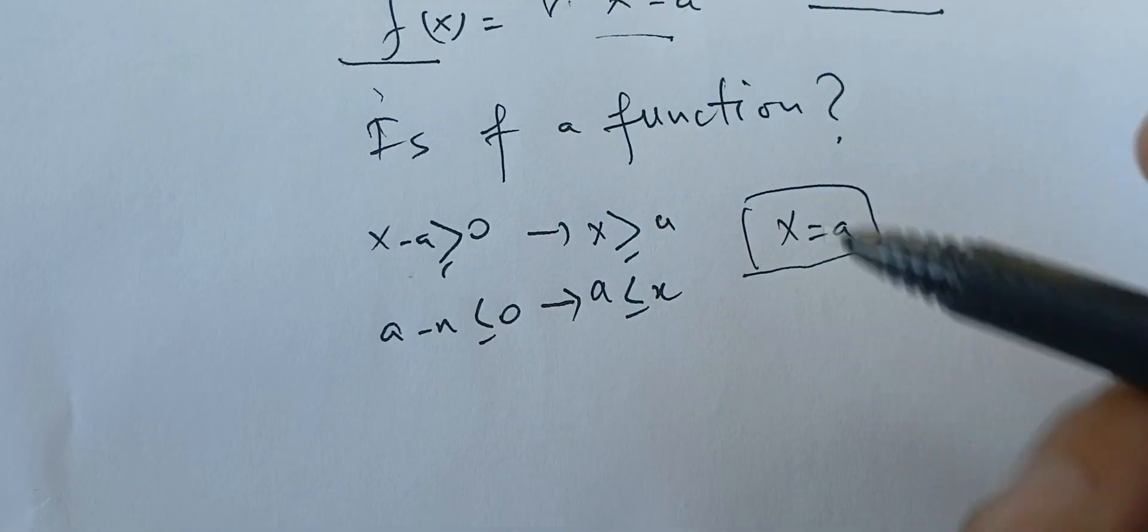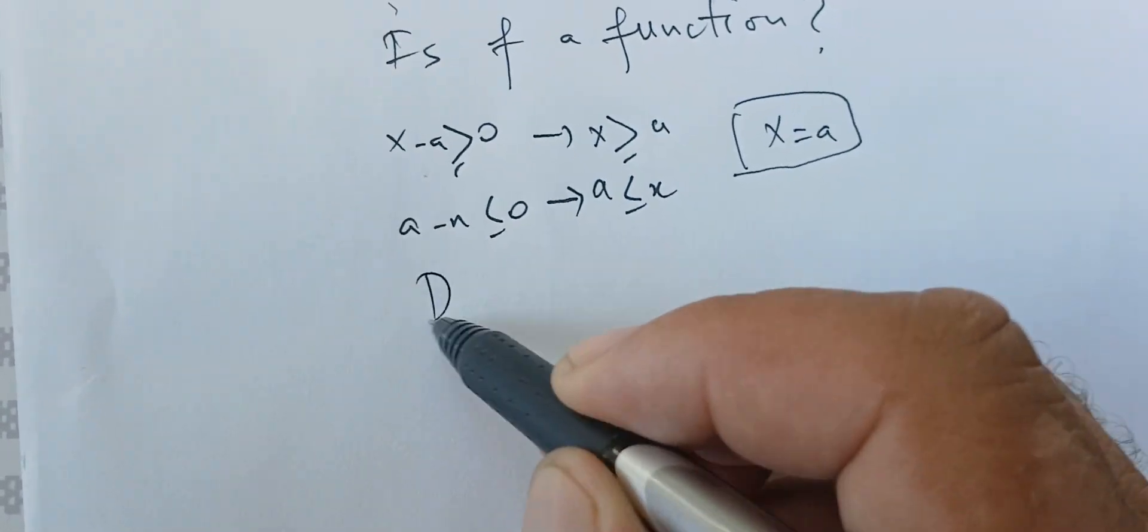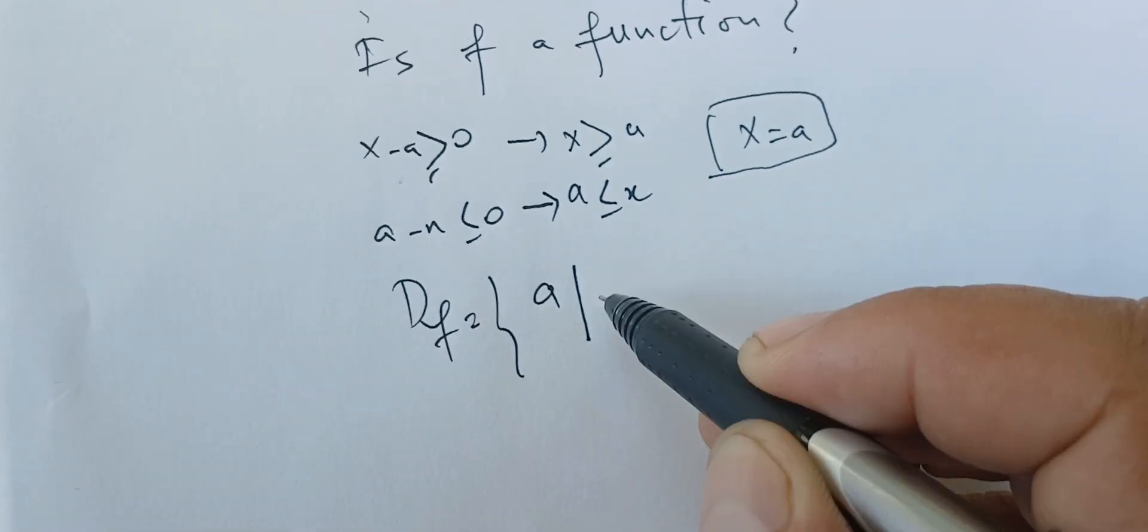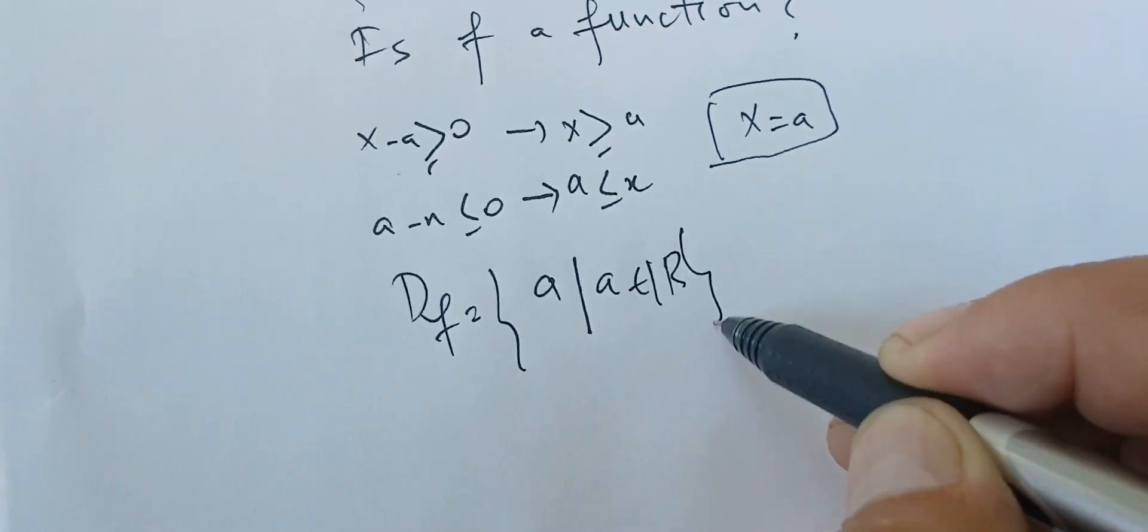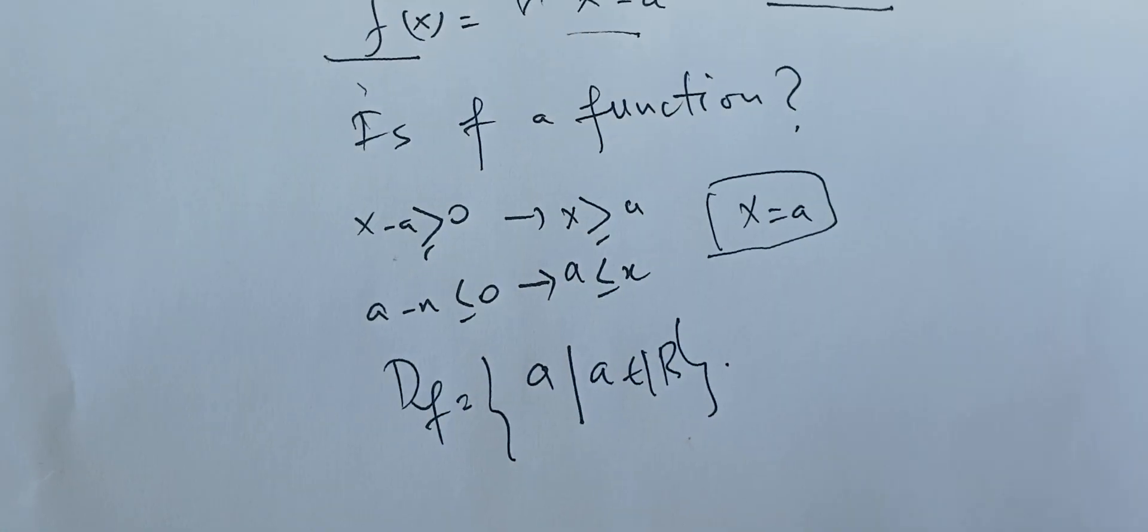That means in the domain of this function, if I write it this way, the domain of f is just a. And a is some number in R. It has only one point.